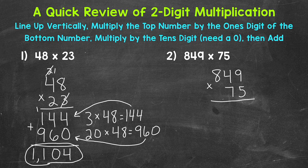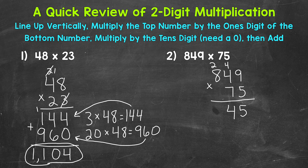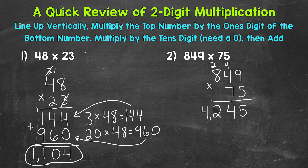Starting with the ones place of the bottom number, we multiply it by the top number. Five times nine is 45 — put our five, carry the four. Then five times four, moving to the tens place: 20 plus four is 24, carry the two. Then the hundreds place: five times eight is 40 plus two is 42 — put our two and bring the four straight down. So five times 849 gives us 4,245. We're done with this five and the carried values.